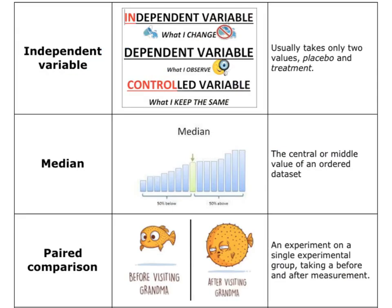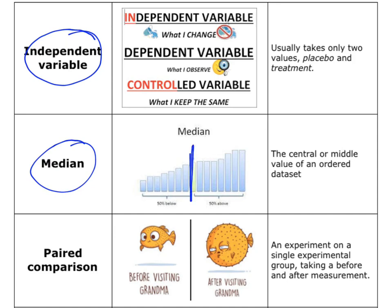Independent variable — the independent variable is the thing that I change. There are usually only two values: the placebo and the treatment. Next, median. Median is always talking about where the middle is — the middle value.